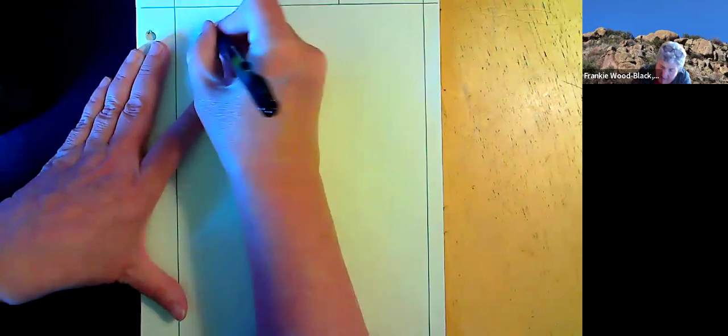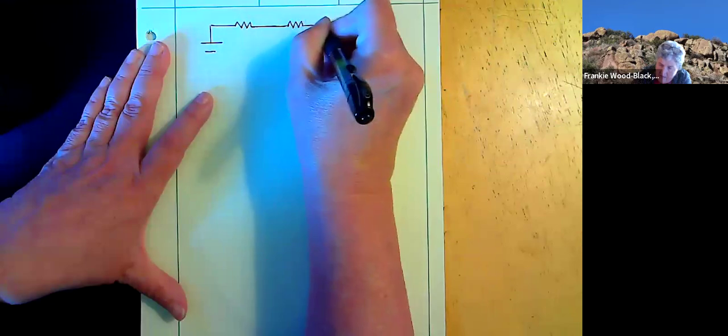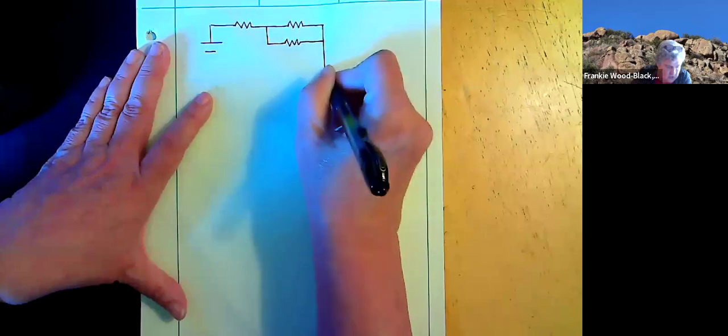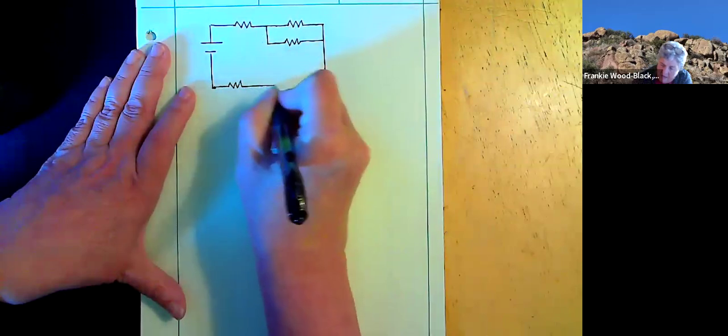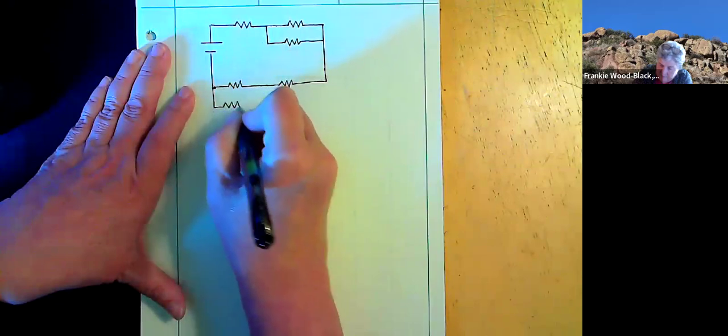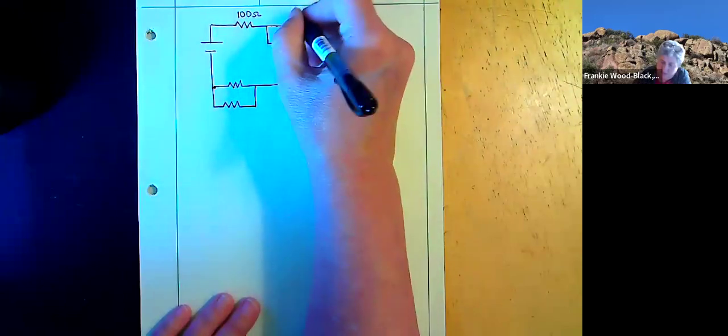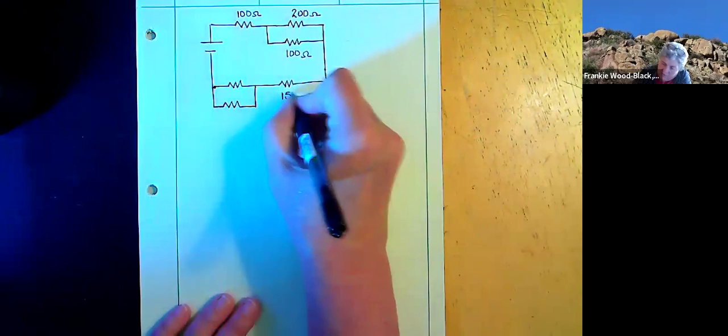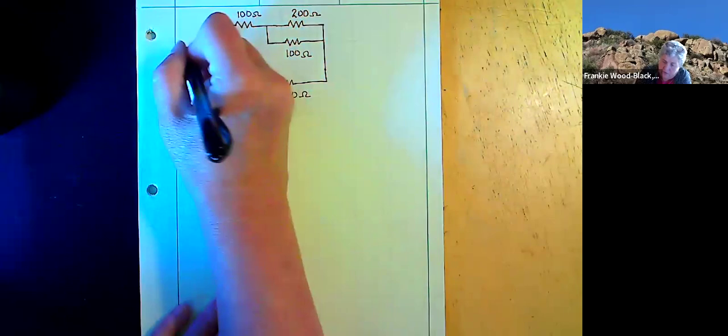I've got a battery here, and I'm going to draw it this way. This is the circuit that I'm going to start with. This is going to be 100 ohms, this is 200 ohms, this is 100 ohms, this is 150 ohms, this is 300 ohms, and this is 100 ohms. And then this is the voltage that I have here.